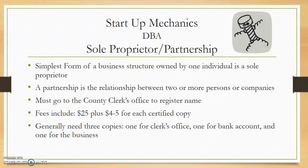Generally, three copies are needed: one for the clerk's office, one for your bank account, and one for your business in your office. With a sole proprietor, you are the business. There is no liability protection, which means you are on the hook for everything — all the liability and all the financials.